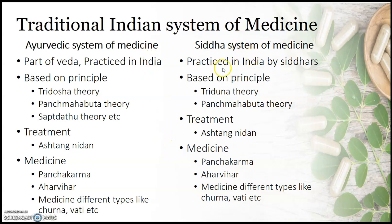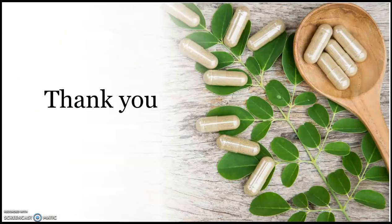Siddha system of medicine is practiced in India by Siddhars — people who have attained Siddhi. It is practiced in the southern part of India, most widely in Tamil Nadu and Kerala, and is also called the Dravidian system of medicine. It is based on similar principles: Triguna theory and Panchamahabhuta theory. Diagnosis is carried out based on Ashtanga Nidana, and treatment similarly involves Panchakarma, Ahar-Bihar, and various medicines. You will find details of all these topics in the book for the diploma. Thank you.